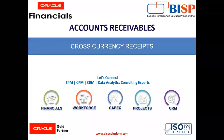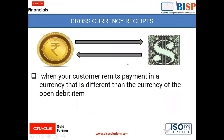Hello everyone, I am Harshita and we are going to discuss the topic cross-currency receipt in accounts receivable today. A cross-currency receipt happens when your customer remits payment in a currency that is different from the currency of the open debit item. In simple language, it is when you have booked a transaction in one currency in receivable and are now creating a receipt against that transaction in another currency.